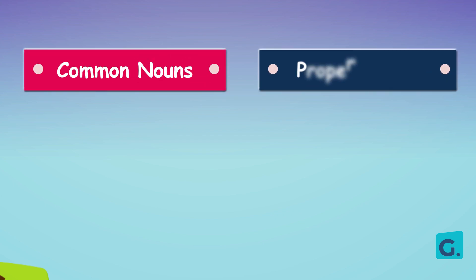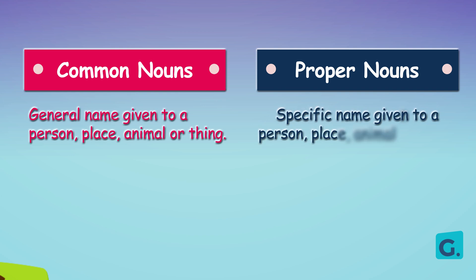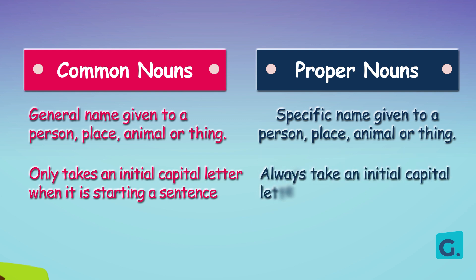Next, let's see the difference between common nouns and proper nouns. Common noun is the general name given to a person, place, animal or thing, while proper noun is the specific or particular name given to a person, place, animal or thing. Another difference is that the common noun only takes an initial capital letter when it starts a sentence, while the proper noun always takes an initial capital letter.